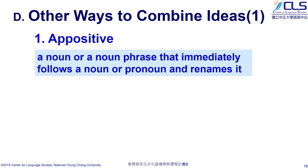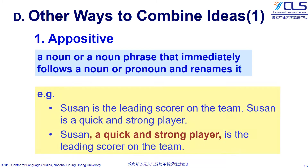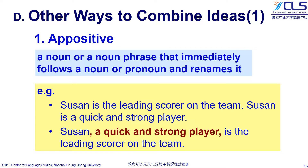Now, we have three kinds of sentence combination. Let's learn other ways to combine ideas. First, an appositive. An appositive is a noun or noun phrase that follows a noun or pronoun and renames it. In other words, the noun and the appositive after it refer to the same object. For example, for these two sentences, we know Susan is not only the scorer of the team but a quick and strong player. We combine the sentences with an appositive — a noun phrase that reads 'a quick and strong player' — and we get: 'Susan, a quick and strong player, is the leading scorer on the team.'